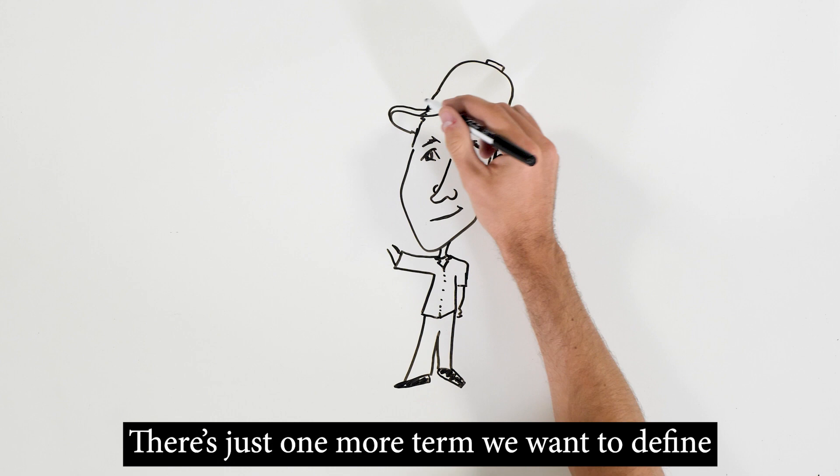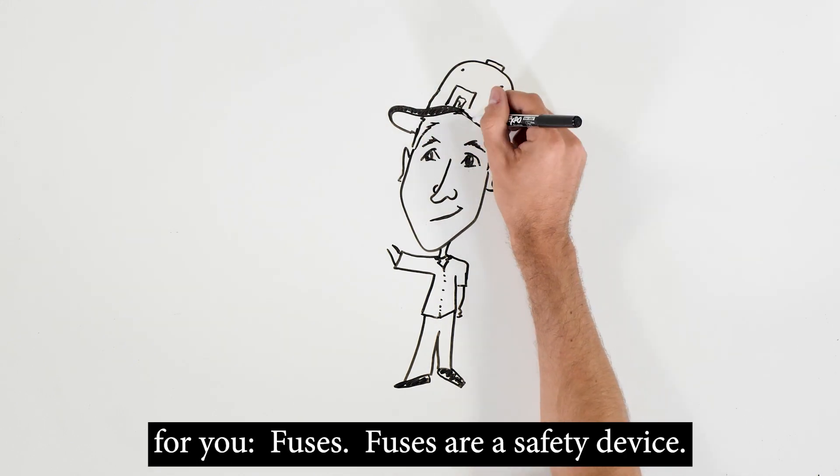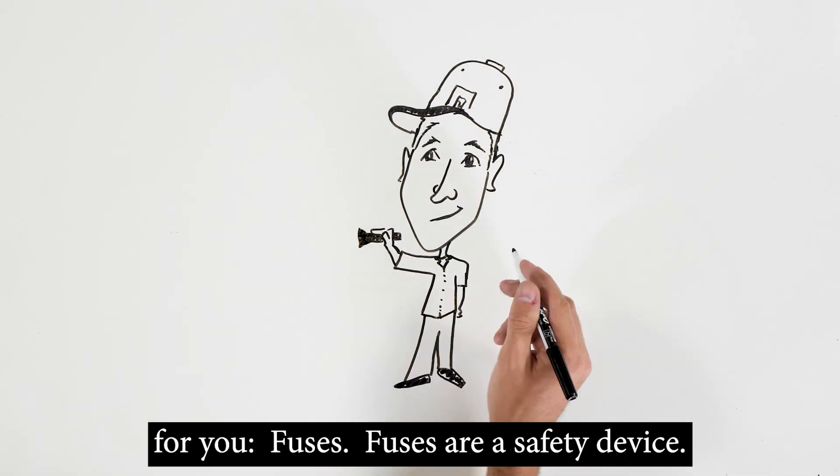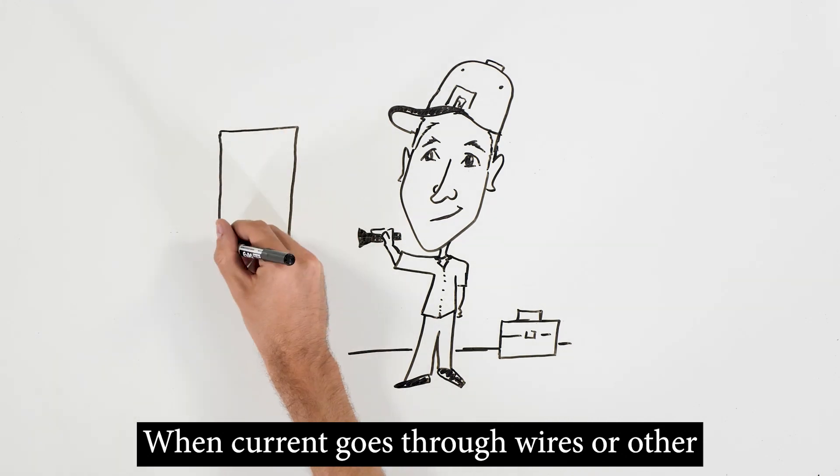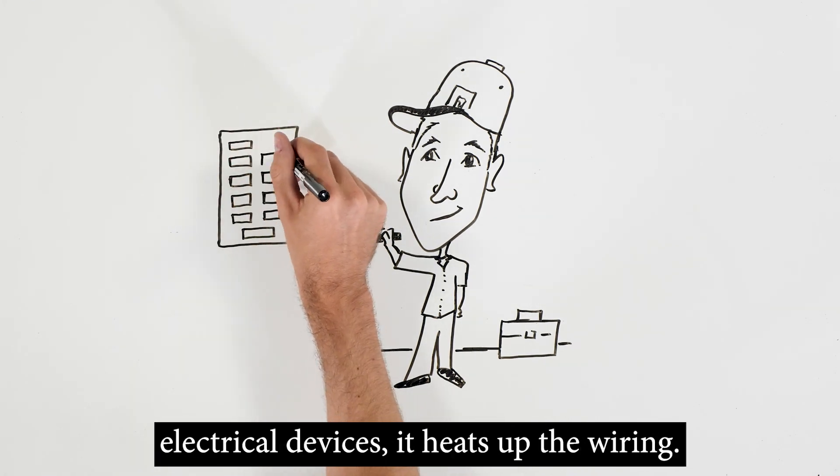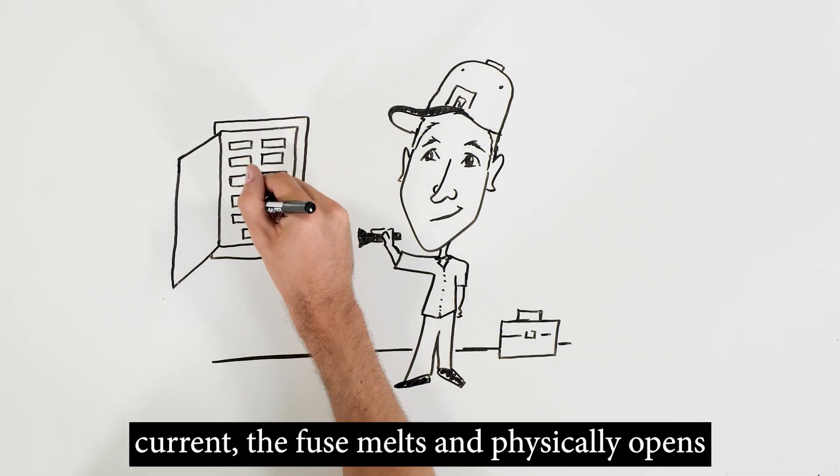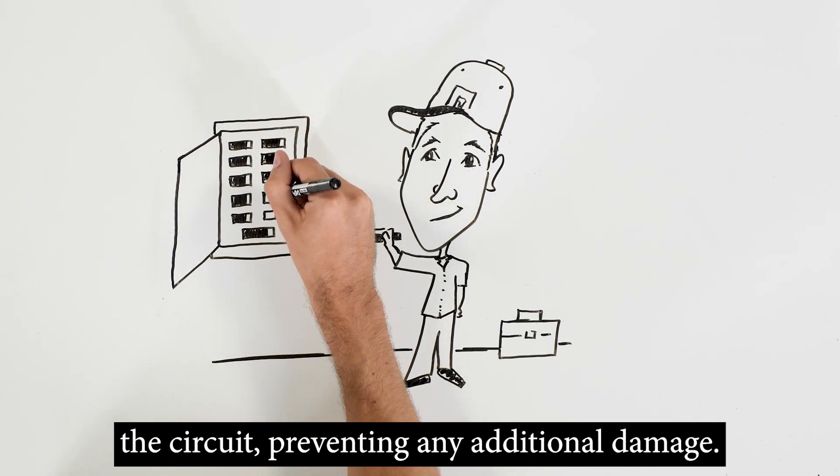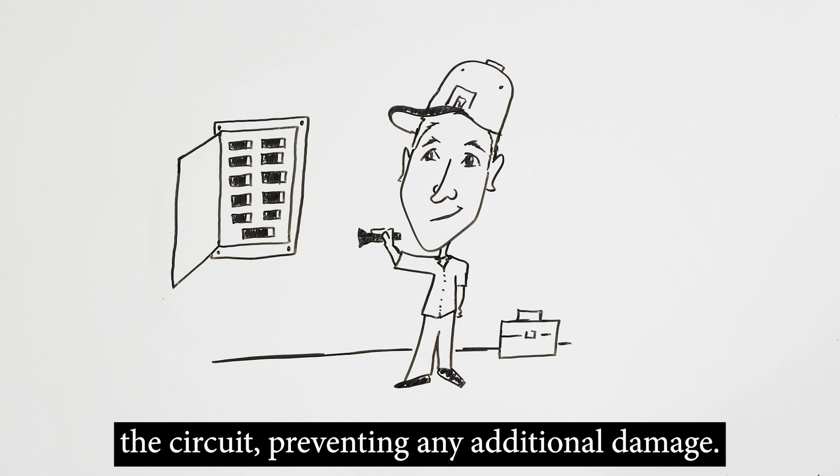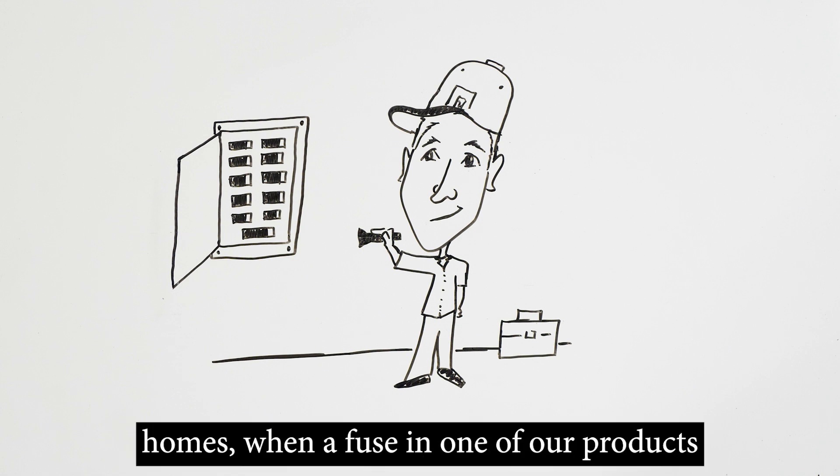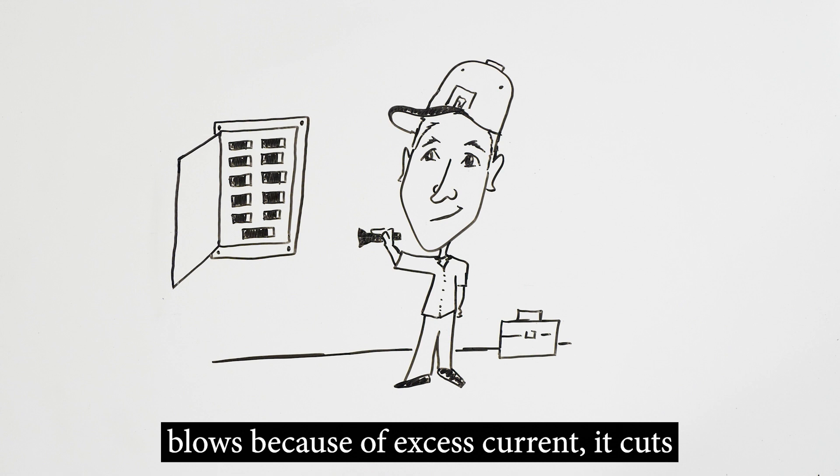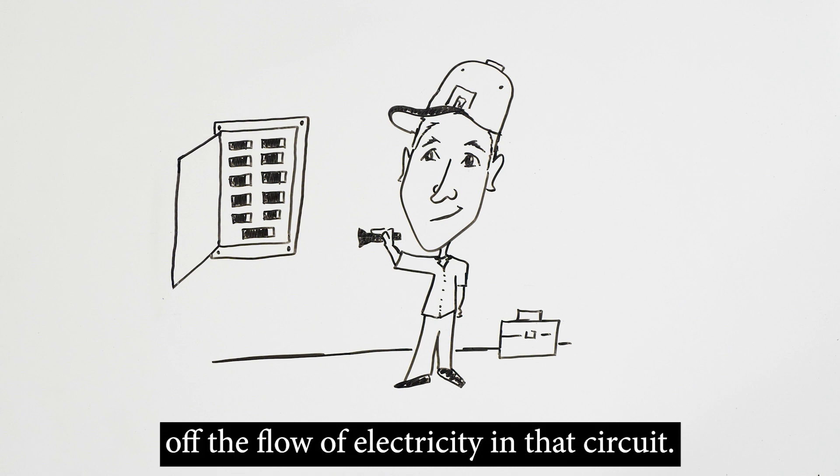There's just one more term we want to define for you. Fuses. Fuses are a safety device. When current goes through wires or other electrical devices, it heats up the wiring. When a problem occurs that creates excess current, the fuse melts and physically opens the circuit, preventing any additional damage. Similar to the circuit breakers in our newer homes, when a fuse in one of our products blows because of excess current, it cuts off the flow of electricity in that circuit.